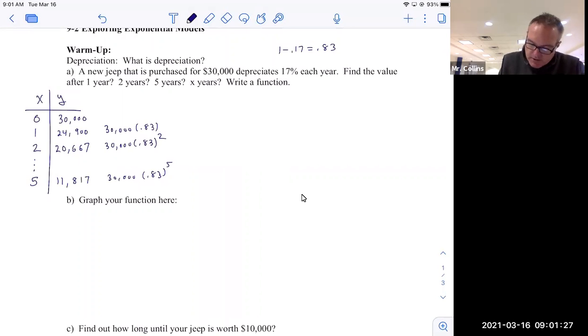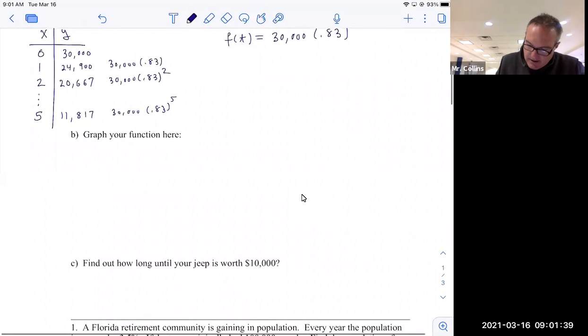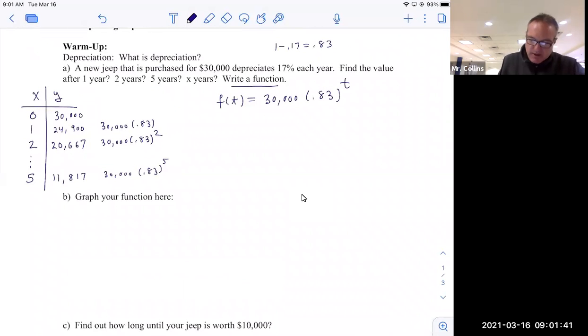And in general, if we want to write a function, right, I guess we should probably use f of t for time. It would be what? 30,000, the initial amount, times 0.83, raised to the power of the number of years. That's really the pattern that's been going on.